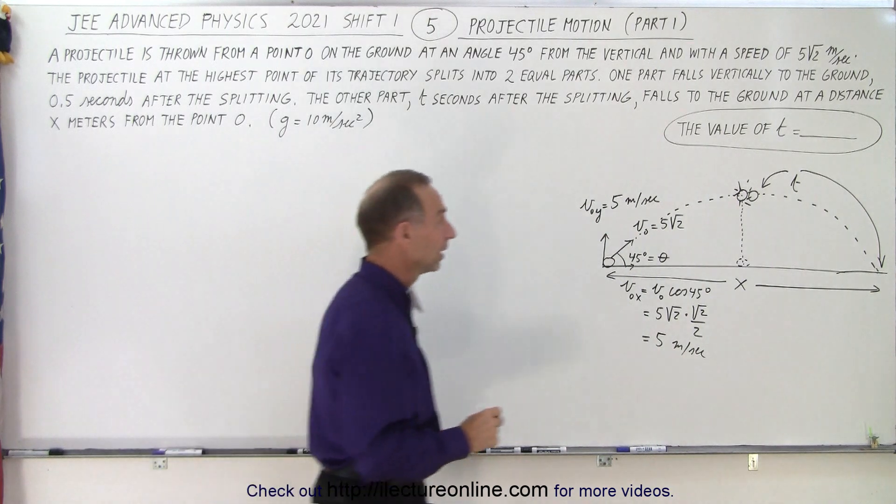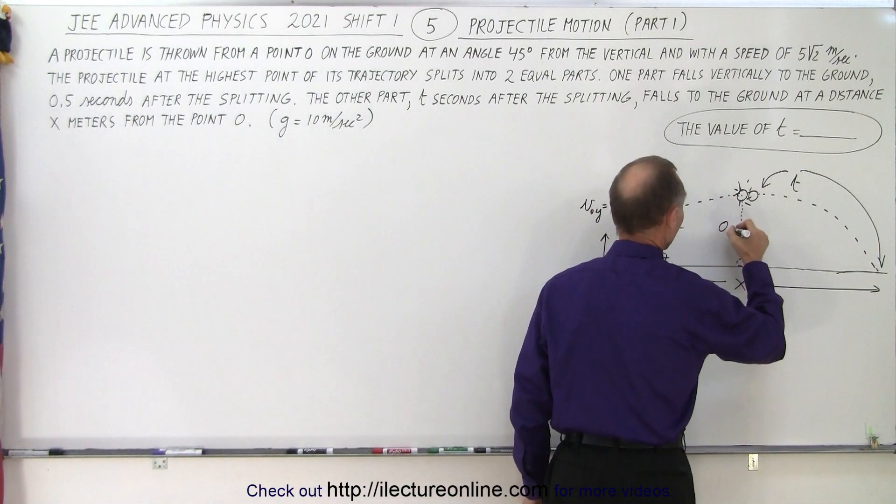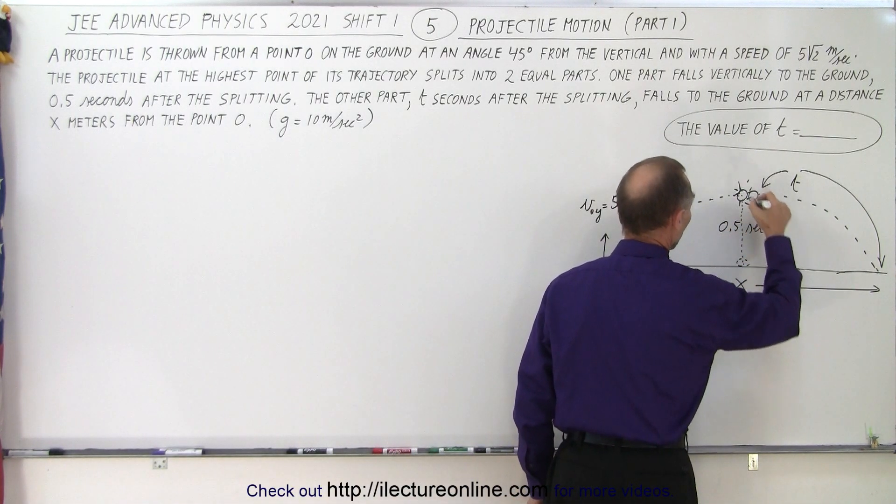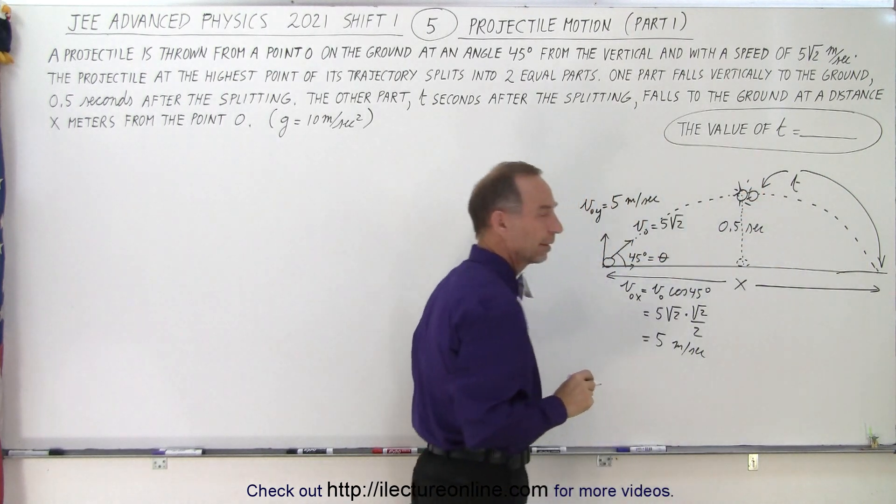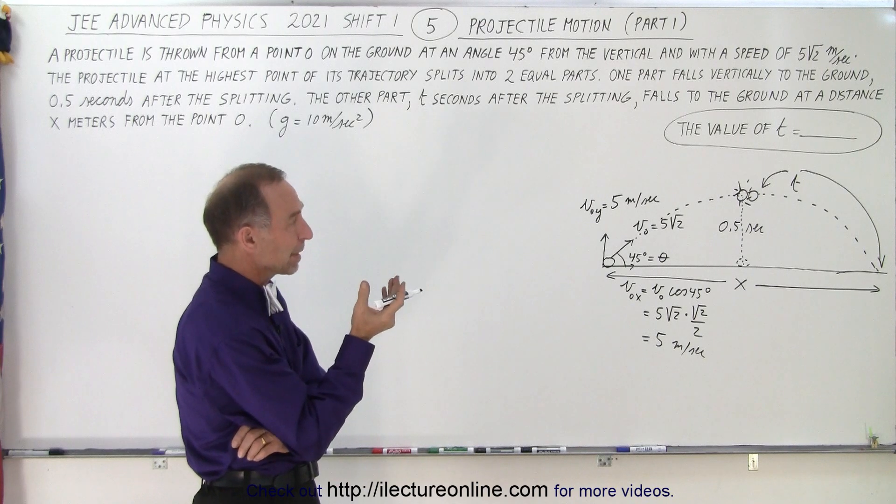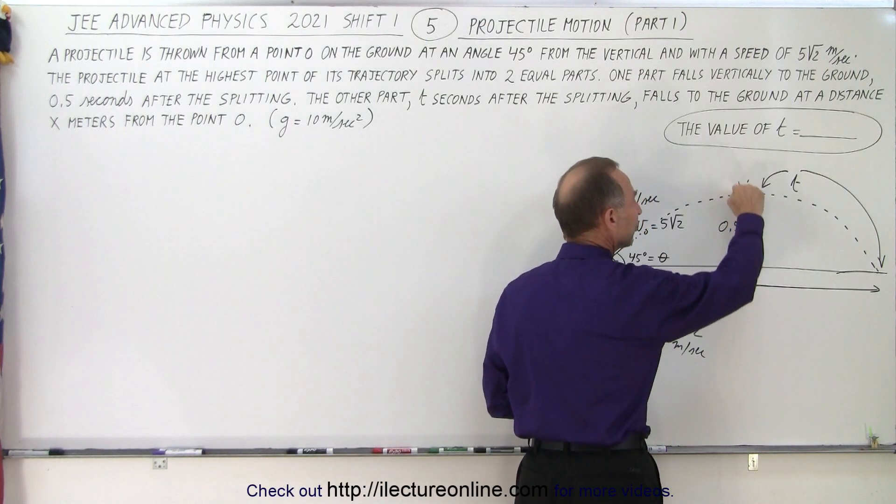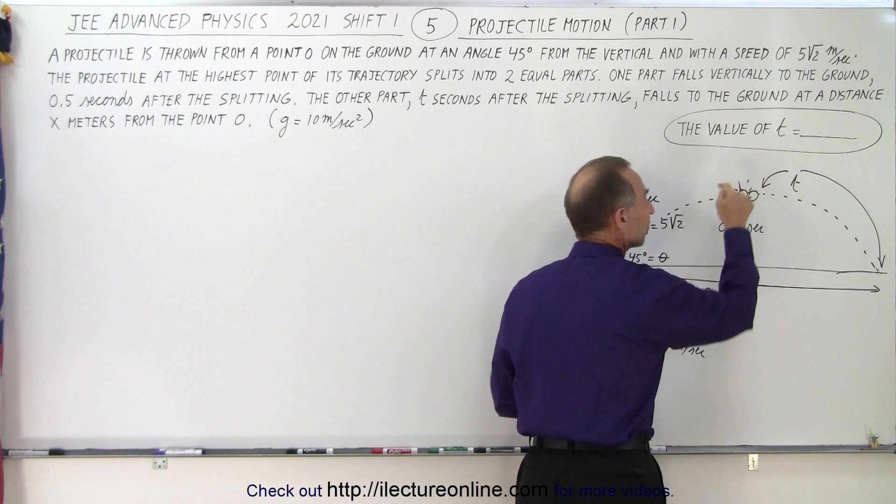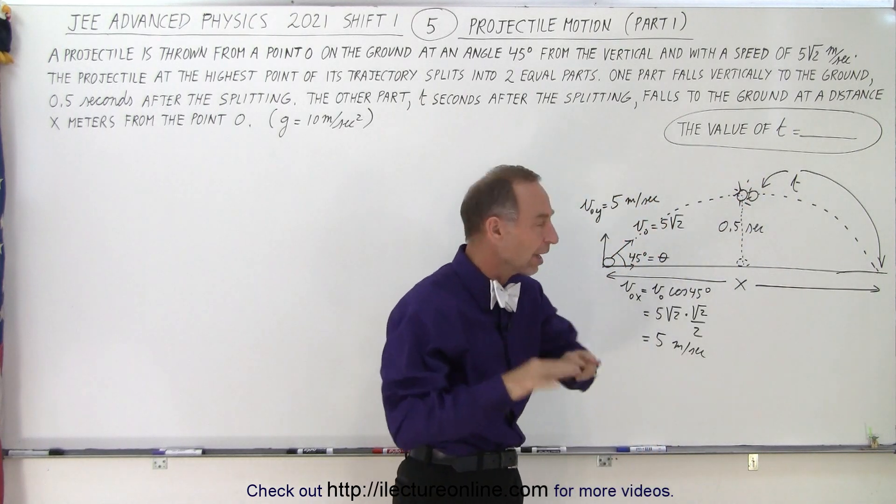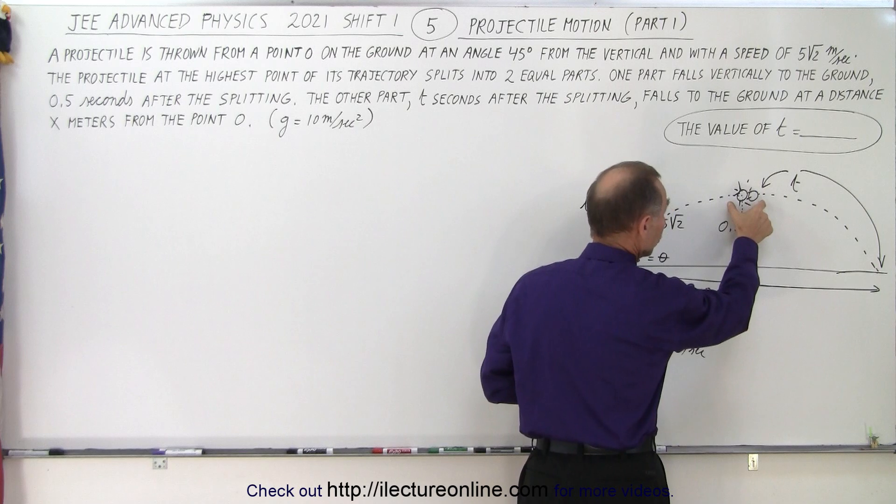Now they do tell us that it takes 0.5 seconds for the one piece to fall vertically to the ground. Now at that point, you say to yourself, wait a minute. It doesn't matter if both of these parts at this point have zero vertical velocity at that very moment in time. There's no initial velocity in the y direction for the two parts.